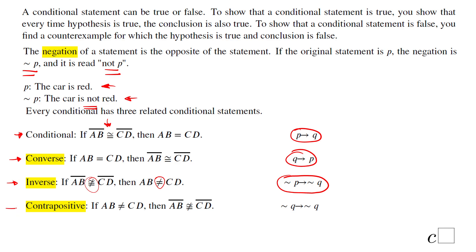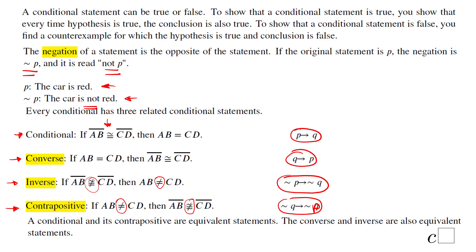The contrapositive is a negation of the converse: if the measure of AB is not equal to the measure of CD, then segment AB is not congruent to CD. Very importantly, the conditional and its contrapositive are equivalent statements, and the converse and the inverse are also equivalent statements. You will see this in the next examples.